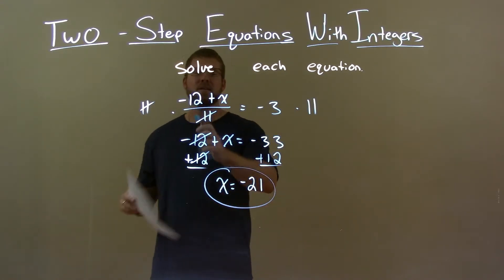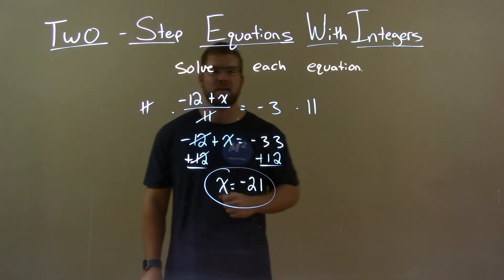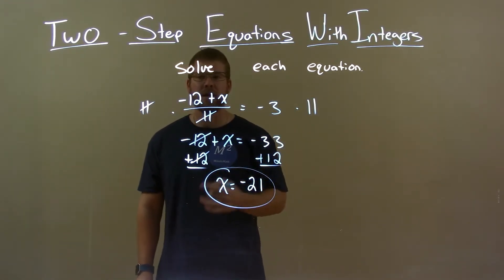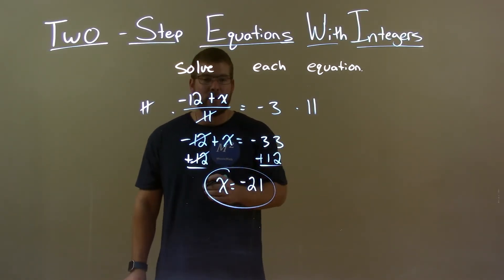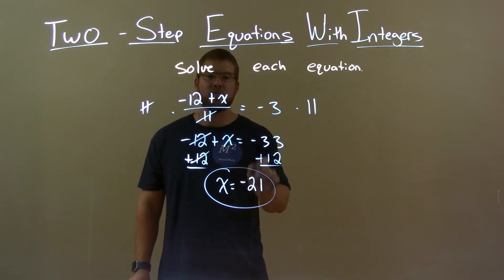Quick recap here. We're given negative 12 plus x over 11 equals negative 3, and we want to solve for x. Multiply both sides by 11, then I add a 12 to both sides. That gave me my final answer of x equals negative 21.